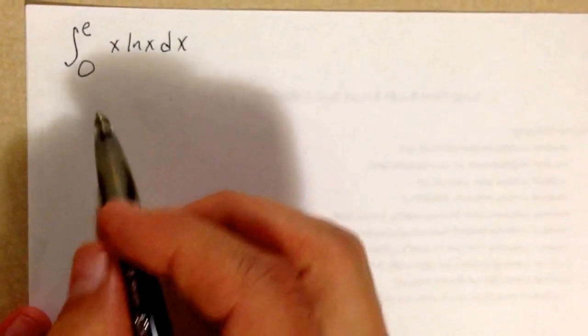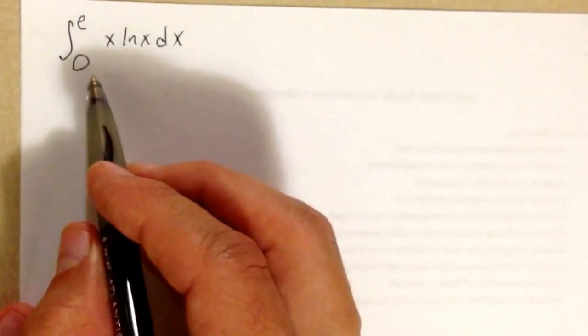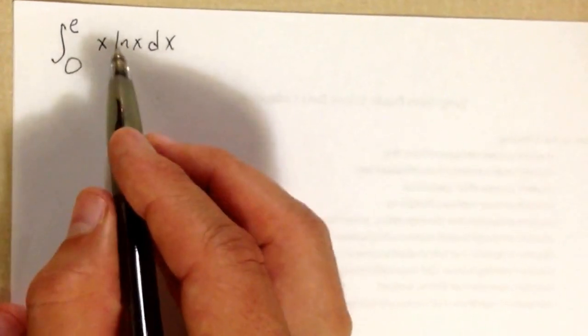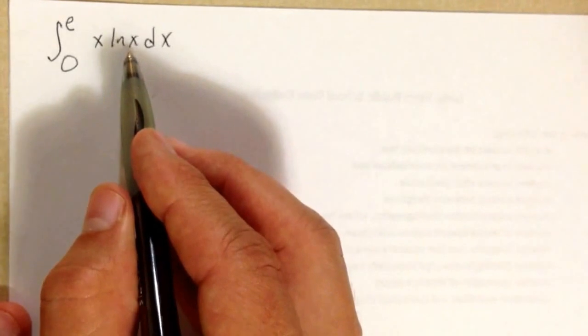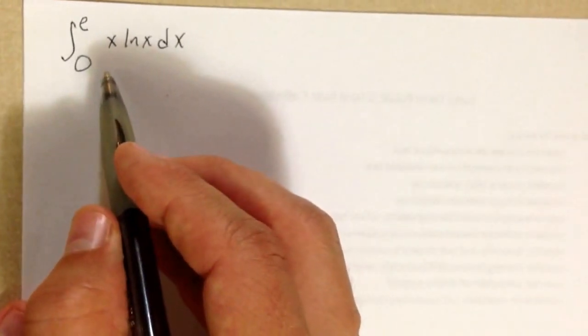Here's an improper integral because notice that what happens as x goes to 0, natural log of x goes to negative infinity. So this is an improper integral of the second type.